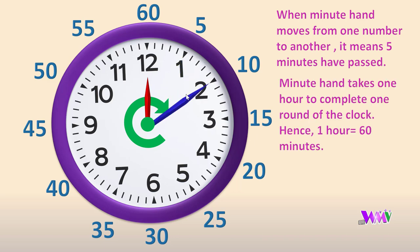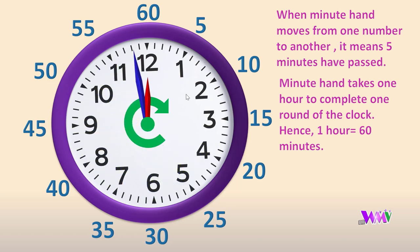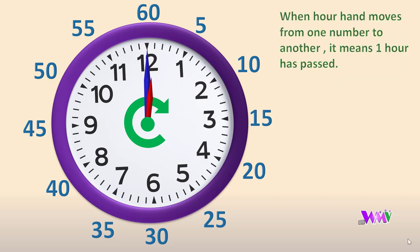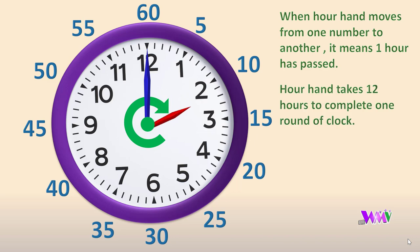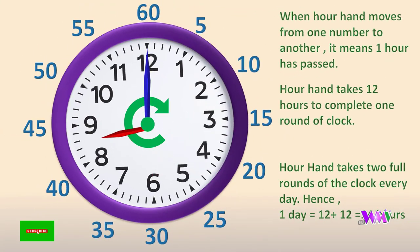The minute hand takes one hour to complete one round of the clock. When the hour hand moves from one number to another, it means one hour has passed. The hour hand takes 12 hours to complete one round of the clock, and takes two full rounds every day.